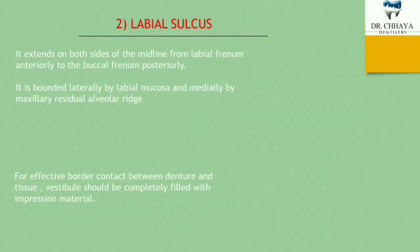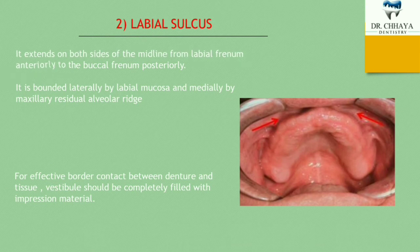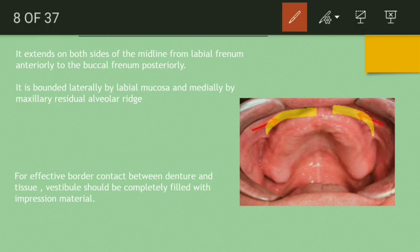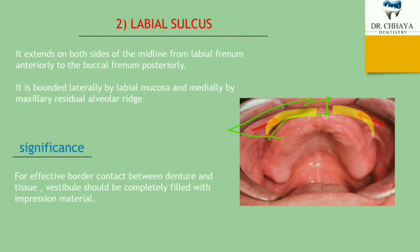The second structure is the labial sulcus. It extends on both sides of the midline from the labial phrenum anteriorly to the buccal phrenum posteriorly. It is bounded laterally by the labial mucosa and medially by the maxillary residual alveolar ridge. For effective border contact between the denture and tissue, the vestibule should be completely filled with impression material so that we get a proper contact of the denture border and the tissue.